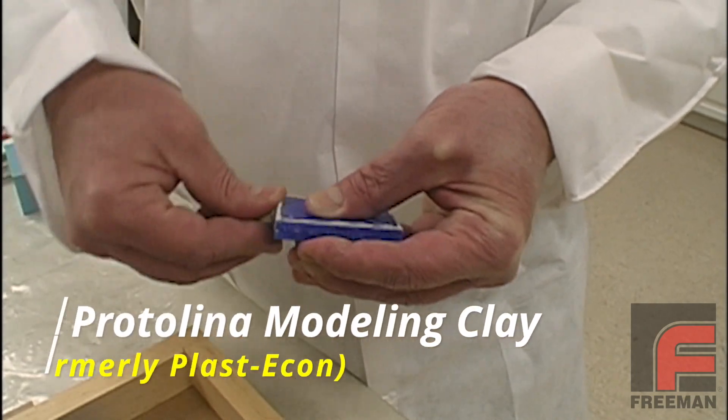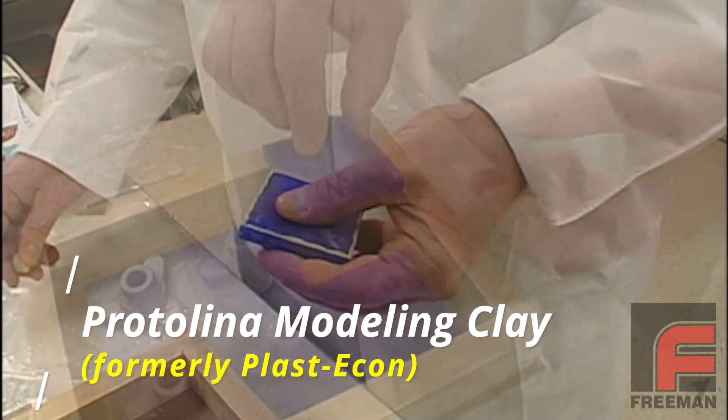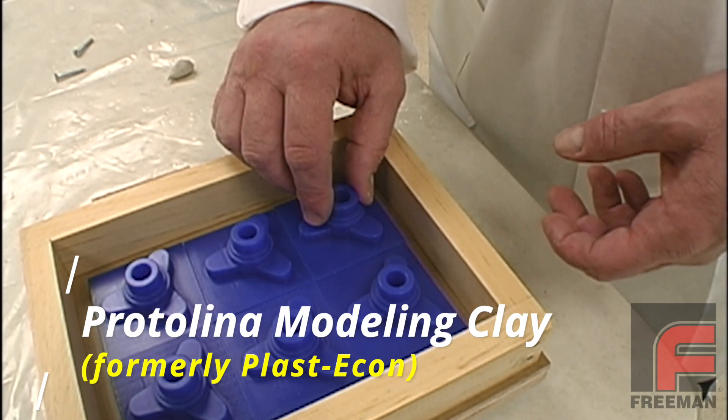Then we apply Plasticon modeling clay to the edges of each model to secure them onto the mold board and make sure the rubber won't flow underneath.